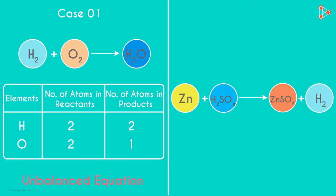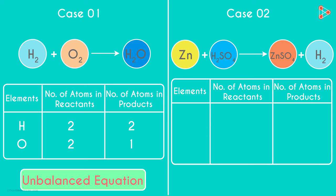If the number of atoms of each element on the reactant side is not equal to the number of atoms of the respective elements on the product side, then we say that the equation is unbalanced. Now can you make a similar table for the equation on the right? Can you fill in the values in these cells?